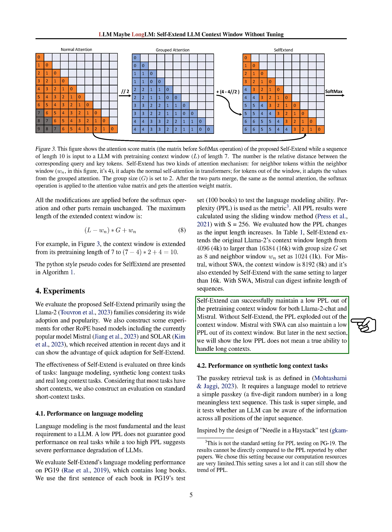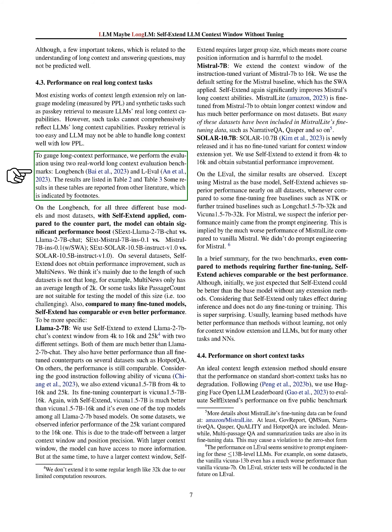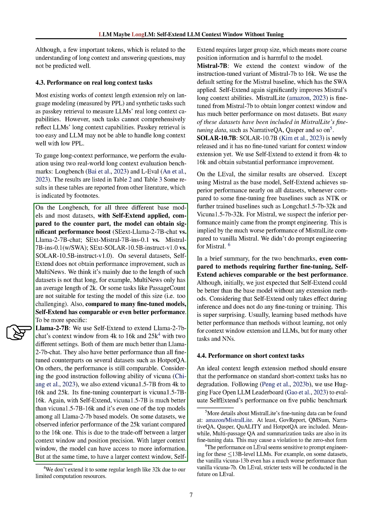We've been studying how to improve the performance of language models on tasks that require understanding long contexts. Many existing methods for extending the context length of language models rely on language modeling measured by perplexity (PPL) and synthetic tasks like PASSKEY retrieval. However, these tasks don't fully capture the ability of language models to handle long contexts. For instance, PASSKEY retrieval is relatively simple, and a language model might struggle with long contexts even if it has a low PPL score. To better assess how well language models handle long contexts, we used two real-world benchmarks: LongBench and L-Eval. We found that applying Self-Extend significantly improved the performance of all three base models on most datasets, though it didn't improve performance on some datasets such as Multi-News, which we believe is due to the relatively short length of those datasets.